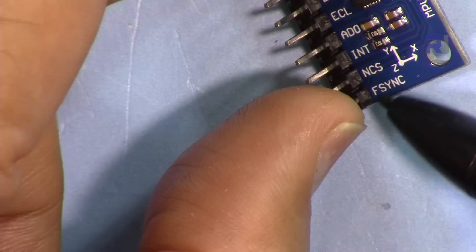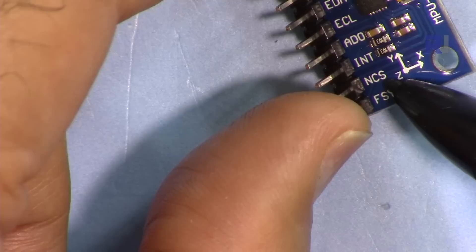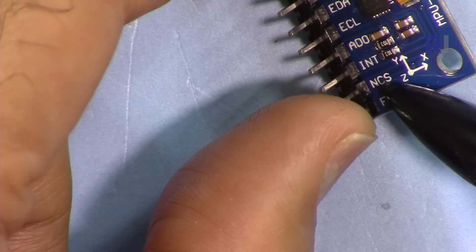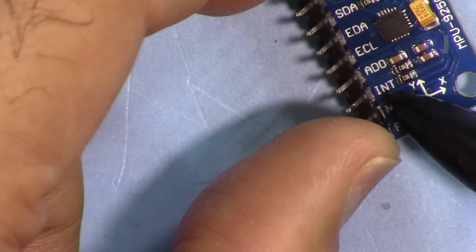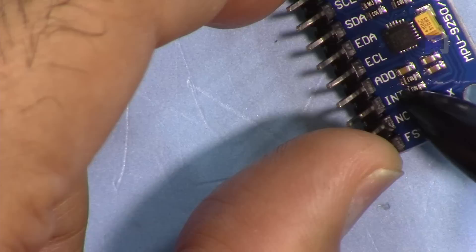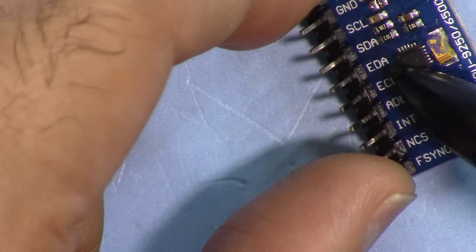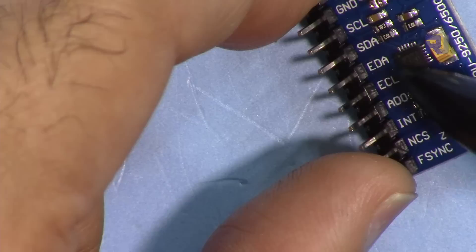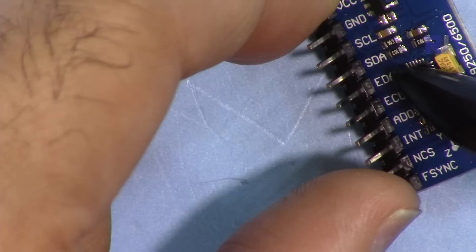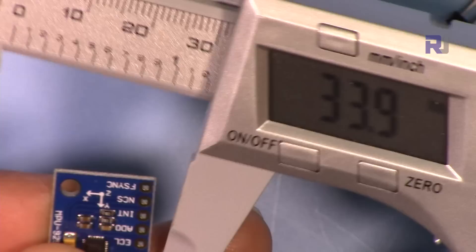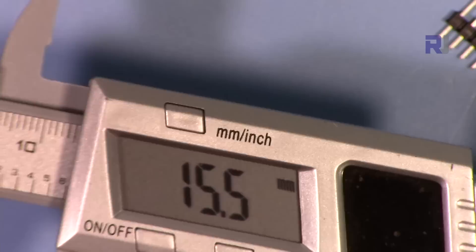FSYNC is frame synchronization. It's recommended that if you're not using it, connect it to ground. NCS is the chip selection in SPI mode. INT is the interrupt. ADO is the address selection for I2C. EDA and ECL are the external data and clock if you're using it to sync with external clock. Then we have the original SDA and SCL that we will use, then ground and VCC.